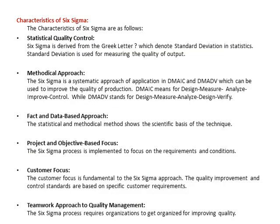Some characteristics of Six Sigma include: statistical quality control, which is derived from the letter sigma denoting the standard deviation in statistics, used for measuring the quality of output. Another characteristic is the methodological approach — a systematic approach that can be used to improve quality production. This refers to DMAIC: Define, Measure, Analyze, Improve, and Control.